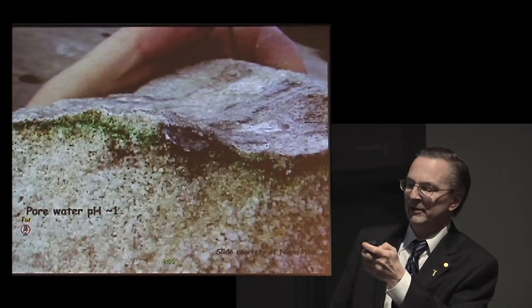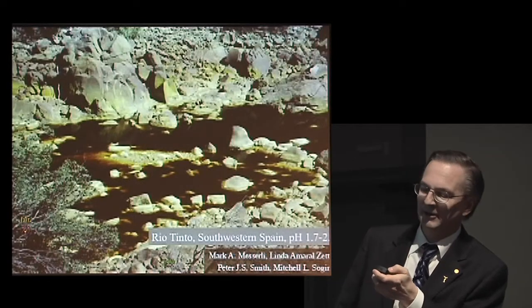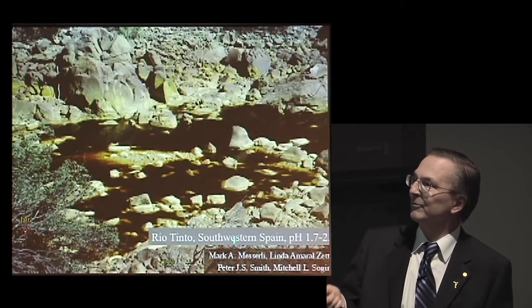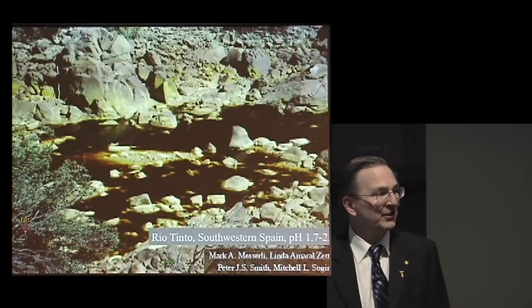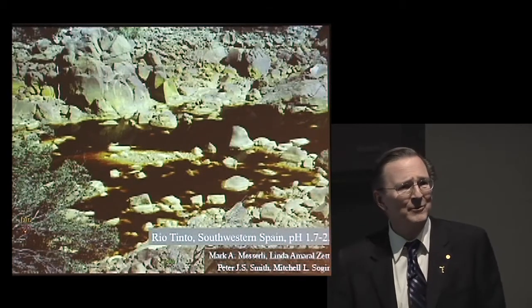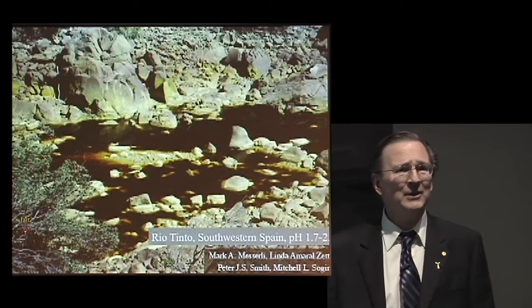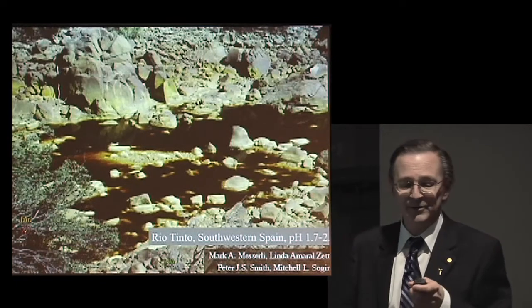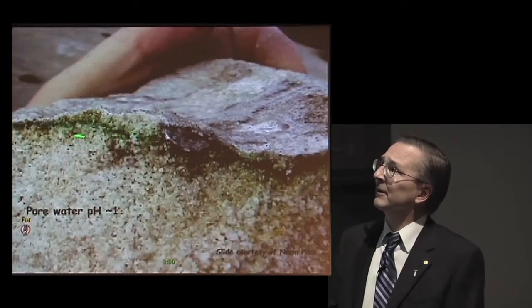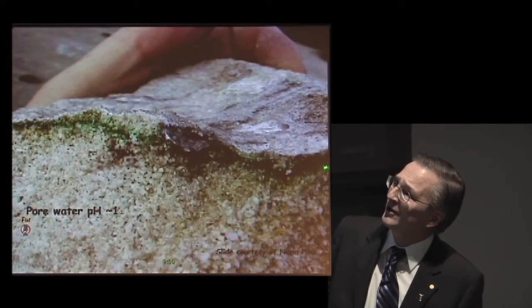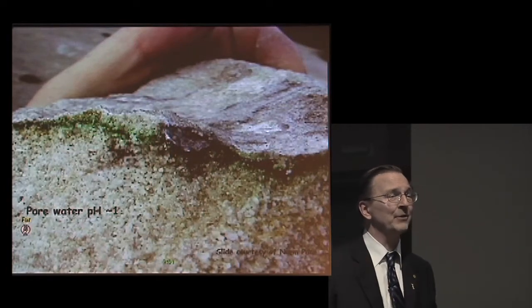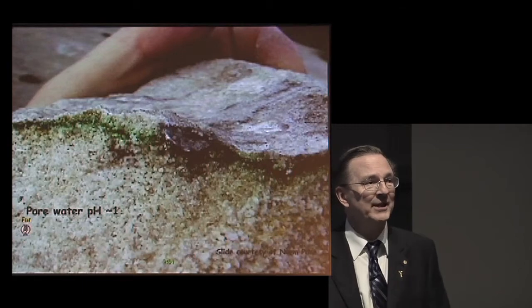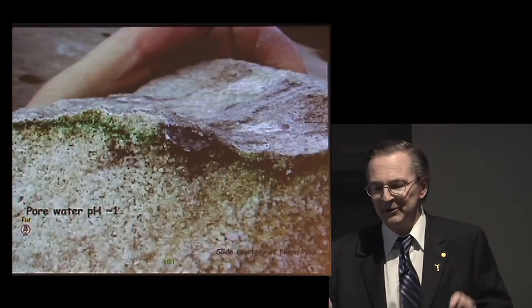It goes sort of beyond that. Here's an example of Rio Tinto in Spain — a highly acidic river — and there are even more acidic environments on the Earth, with pH down to zero, and there's just abundant life in these environments. You can see a green layer inside the rock: algae growing in the rock. We know now that there's life kilometers down in pores of rocks. Life is everywhere.